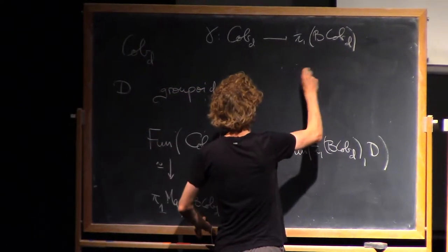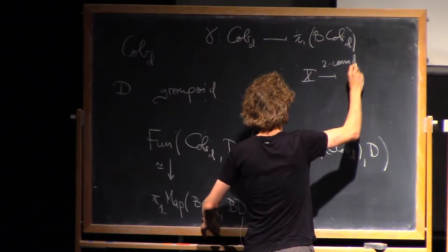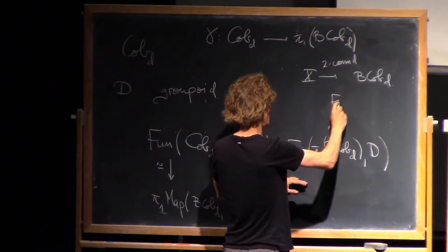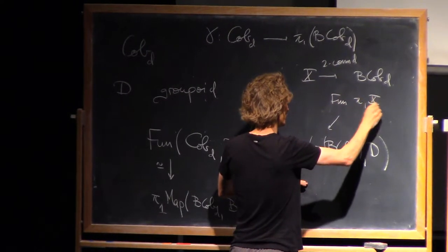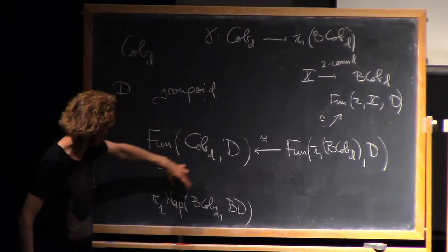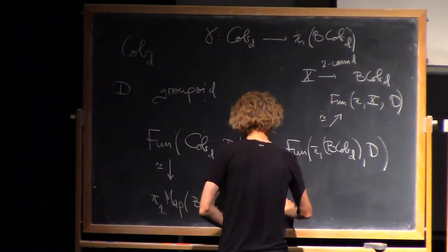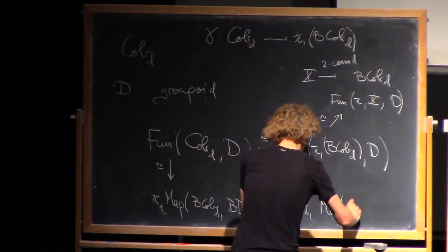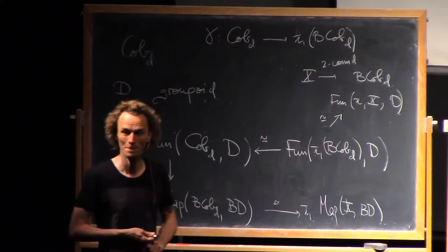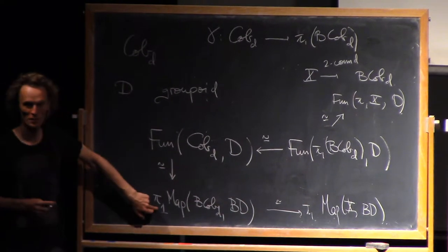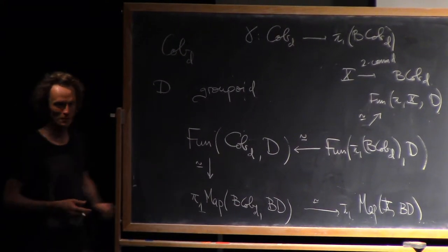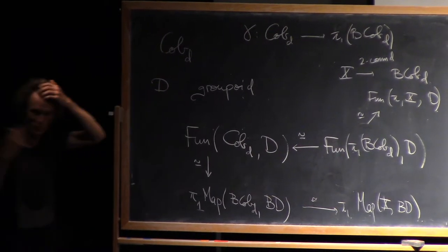And also, if I have a two-connected map to b cobd, then we could also precompose with that. And similarly, I could replace this mapping space with maps out of x. So pi1 means the fundamental groupoid, that's my notation, if I don't put a base point. So it's a groupoid and the set of isomorphism classes is then pi0 and the automorphism group of an object is the usual fundamental group.